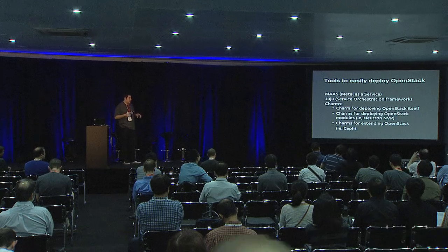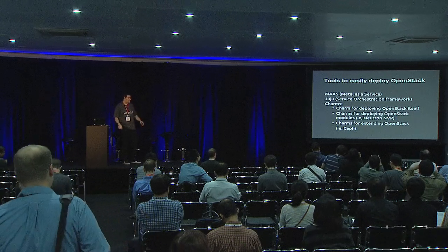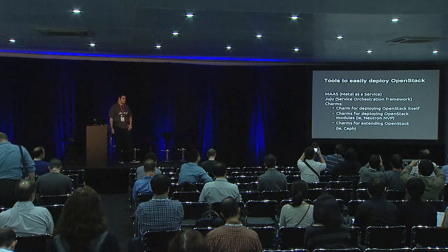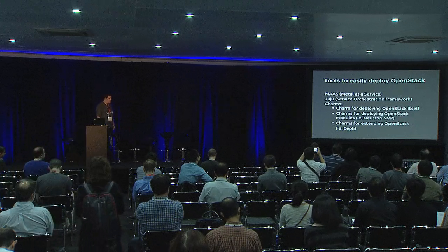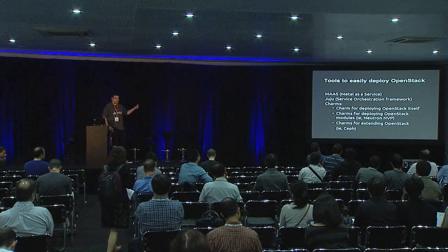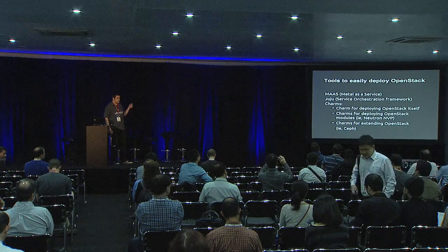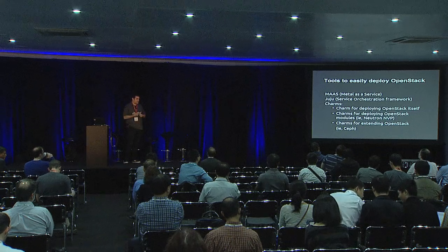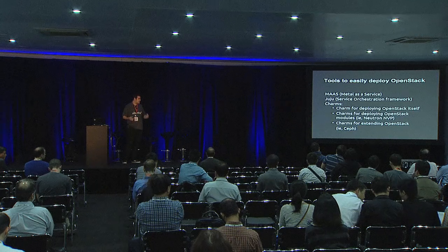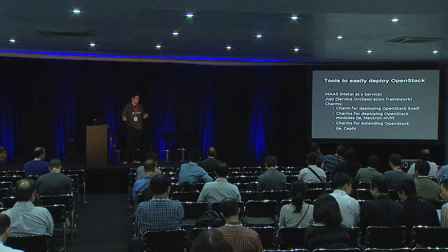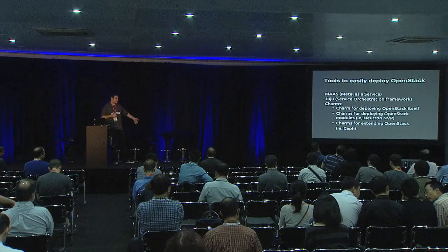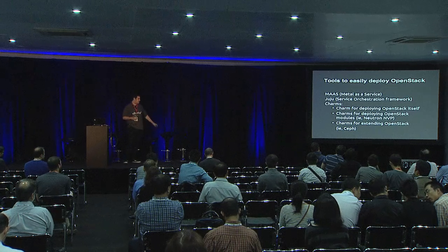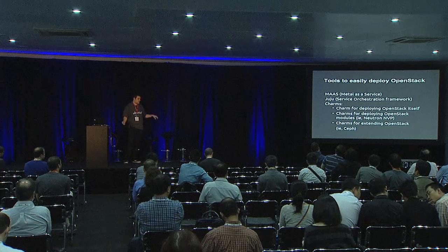Juju sits in the middle of the stack of tools that let us deploy OpenStack. At the bottom we have what's called MAAS — Metal as a Service — a machine provisioning system similar to tools like Cobbler. It allows us to take racks of unprovisioned servers, dedicate one server to provisioning by installing a MAAS server, boot up the rest of the servers, set them to netboot, and they automatically enlist into MAAS, get commissioned, and get put into the MAAS inventory. Once there, these servers are at the disposal of anyone who wants to use them via an API, abstracting away hardware provisioning and making it look like a cloud endpoint.